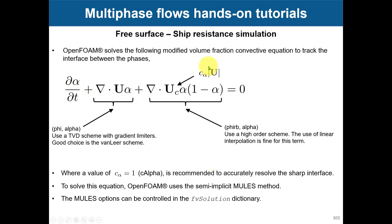In fvSolution we set up options to solve the alpha equation. The coefficient cAlpha is recommended to be set to one. It is also recommended to solve this equation using the MULES approach — a semi-implicit method — so that you are not restricted to the explicit CFL time step limit. This allows larger time steps.